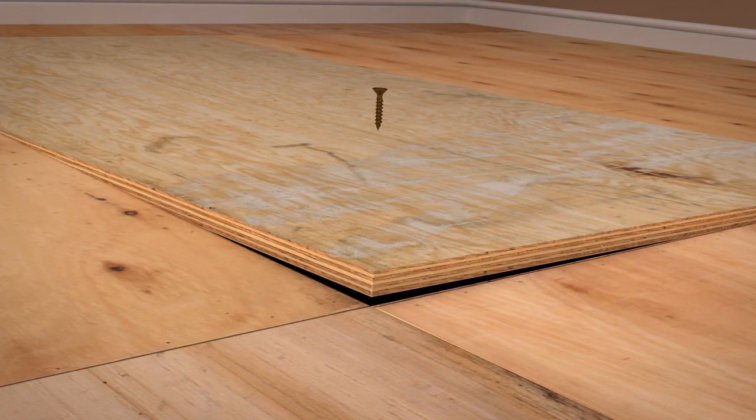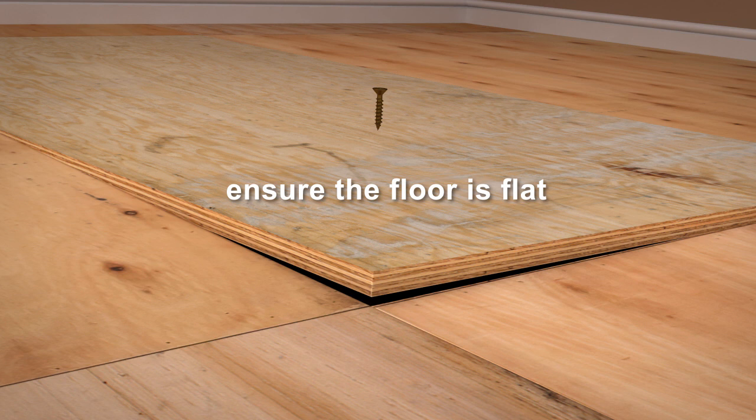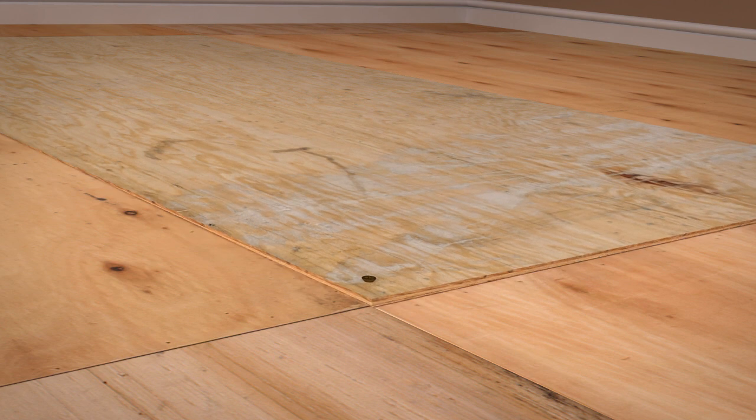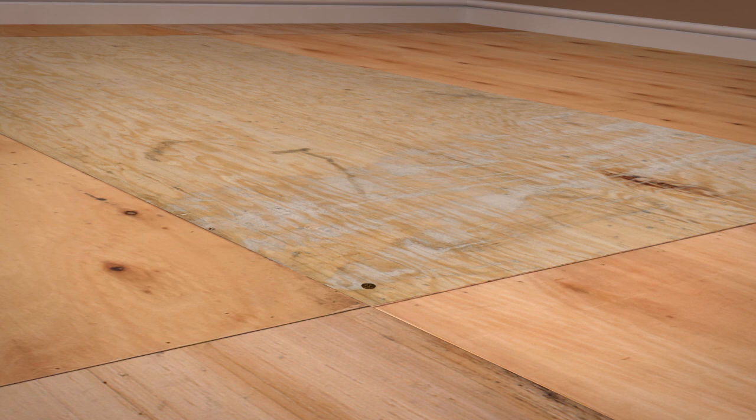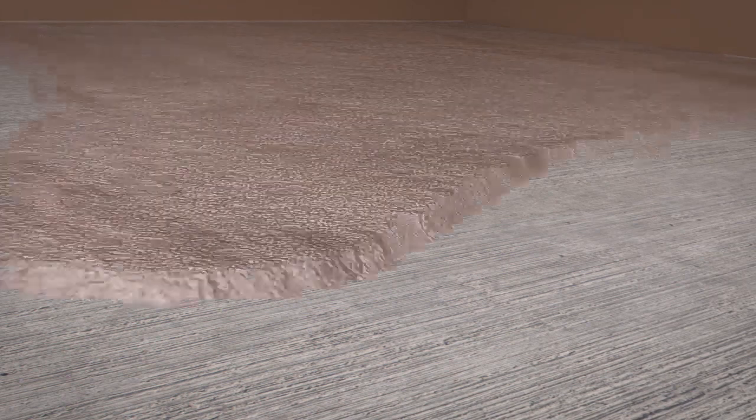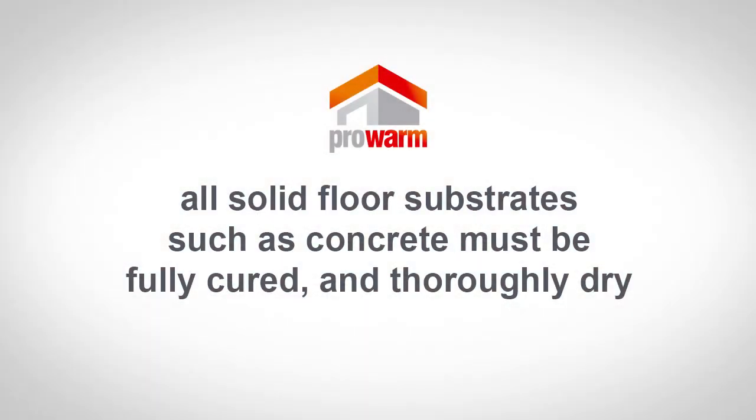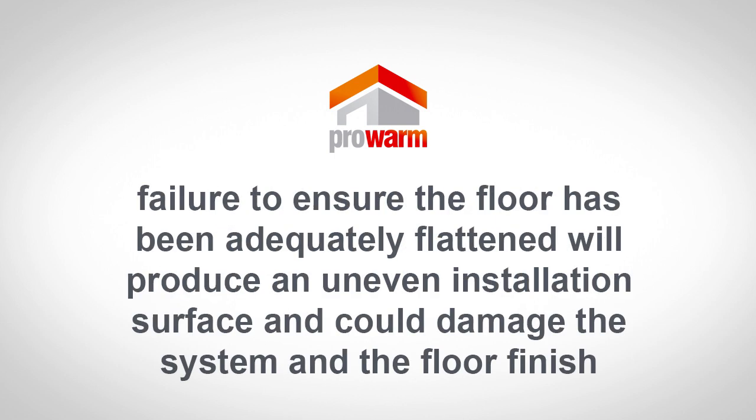Before you install the ProWarm Advanced Overfloor Heating Panel, you must ensure the floor is flat. If installing on a wooden subfloor, ensure all plywood boards are flat, with no protruding nails, screws, and are completely free from debris and solidly fixed down. If installing onto a concrete base, use a suitable leveling compound to flatten out any bumps in the surface. All solid floor substrates, such as concrete, must be fully cured and thoroughly dry. Failure to ensure the floor has been adequately flattened will produce an uneven installation surface and could damage the system and the floor finish.